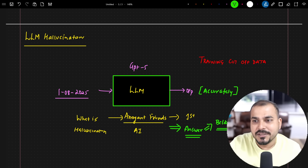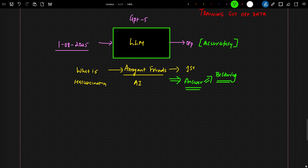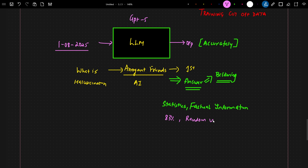Most of us will start believing it because the answer is stated in a way that once you understand what he is saying, you may think it's factually right. This is what hallucination is all about — even though the answer is not right, this arrogant friend or my LLM model has made up that particular answer and presented it. It will try to give the answer in such a way that statistics and factual information appear to be available, saying things like '83 percent' — providing some factual-sounding information from some random use case, even though those use cases are not true. This is one of the major problems throughout all the LLMs being trained by companies.